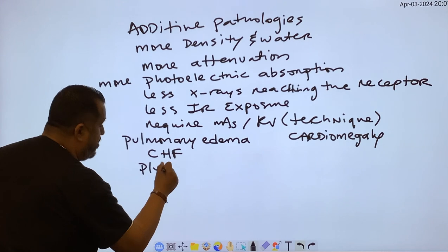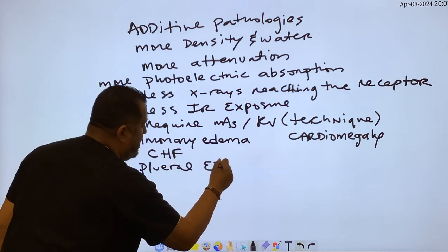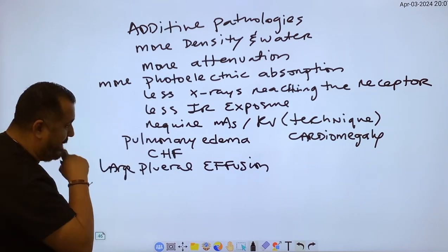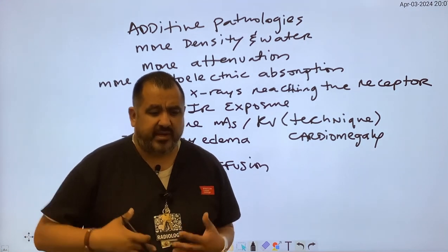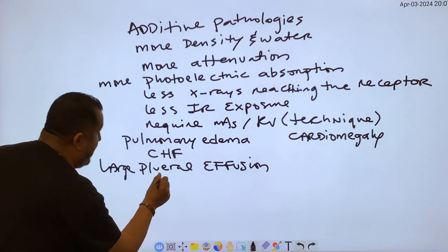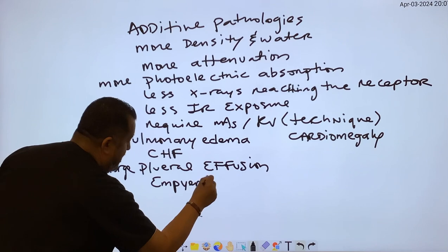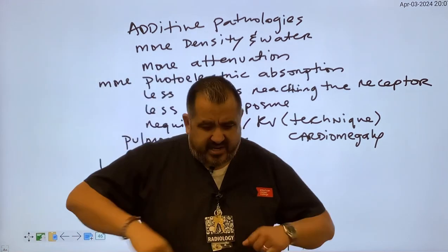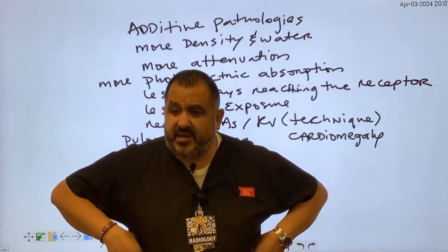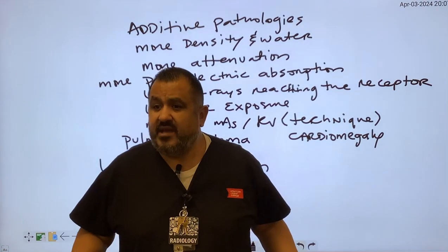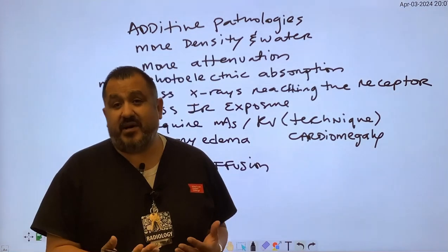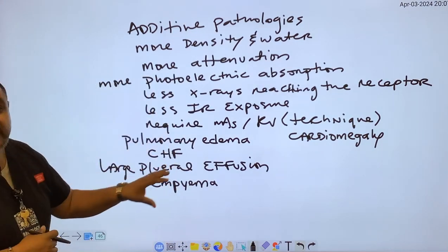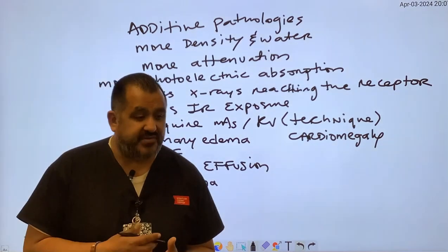Another additive pathology is pleural effusion, usually a large pleural effusion — a smaller one won't make much of a difference. If somebody has an infection of the pleural cavity and there's pus, patients may have chest tubes to allow the pus to drain from the thoracic cavity. That's going to be known as empyema. The x-rays have to go through the pus as well. These are examples happening with the chest, but additive pathologies can occur throughout the entire body.